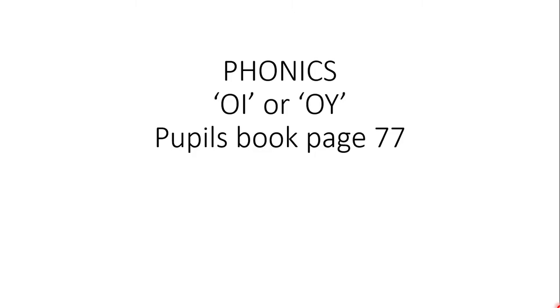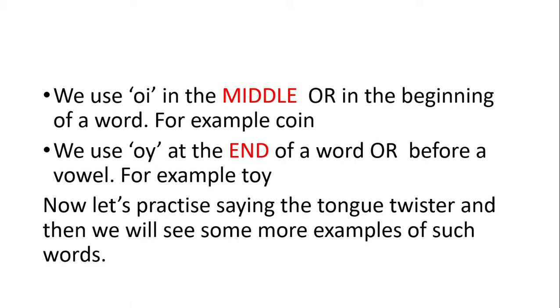So very important to understand: the use of oi is done in the middle or in the beginning of a word, for example coin. Oi is used in the middle of the word, whereas oy is used at the end of a word or before a vowel. For example toy, it is used at the end of the word.